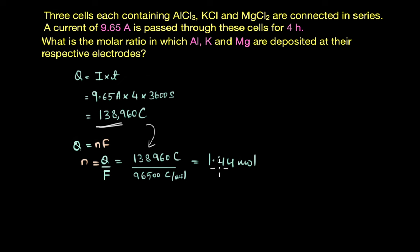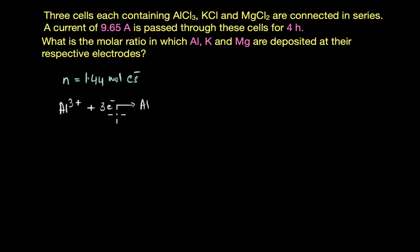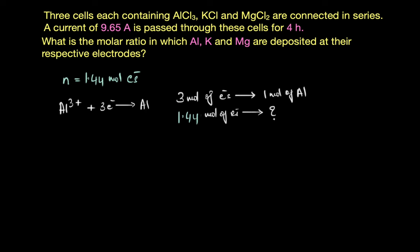We need to look at the half reactions to determine how many moles of electrons are required for the reduction of each metal. With 1.44 moles of electrons available and the half reaction for aluminium showing that 3 moles of electrons are required to deposit 1 mole of Al, a simple cross multiplication tells us how much aluminium would be deposited.